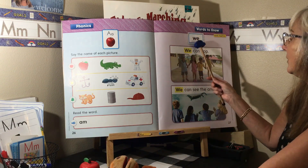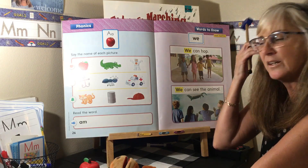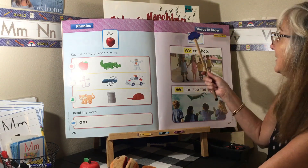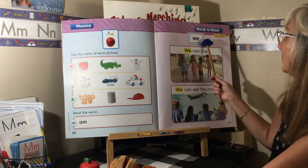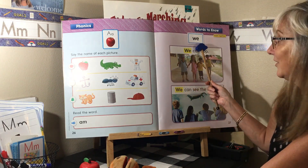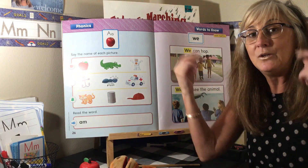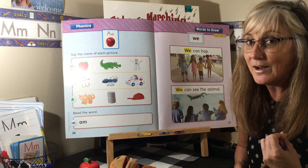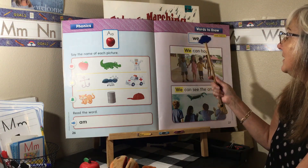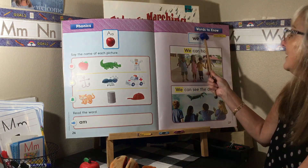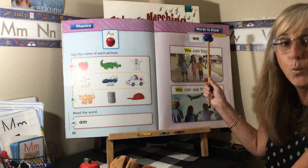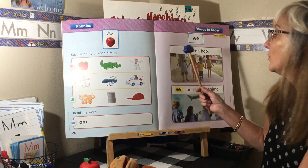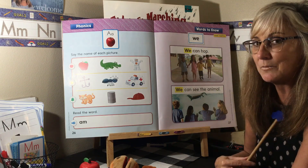We also learned a new word — this is the word we. I know a song for we: W-E, we! W-E, we! W-E, we, walk together. We walk from my house, we walk to your house, always together, friends forever. W-E! So that's our song for we. When we see this word, we know it says we.